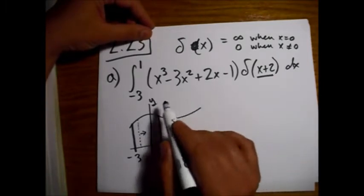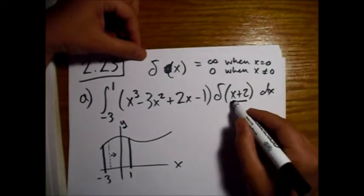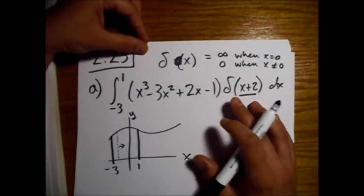Basically, we have a spike. In this case, it's at minus 2, right? Because when minus 2 plus 2 equals 0, that's when the delta function exists.